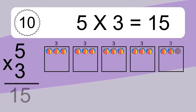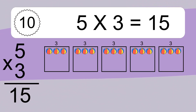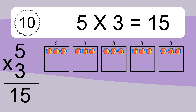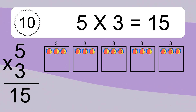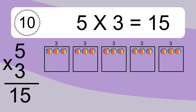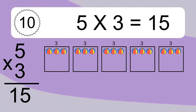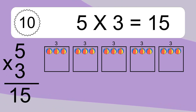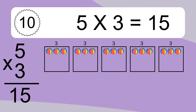5 times 3 equals what? 5 times 3 equals 15. We have 5 boxes, and each box has 3 colorful balls inside. If you count all the balls in all the boxes together, you will have 5 times 3 balls. This equals 15 balls.